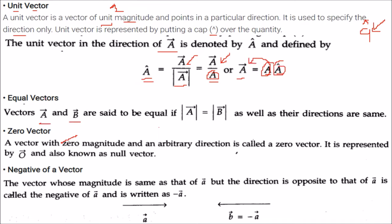Vectors A and B are equal vectors when both their magnitudes and directions are equal. The magnitude is represented by placing two vertical bars around the symbol. A zero vector has zero magnitude and some arbitrary direction, represented by zero with an arrow — also called a null vector. The negative of a vector A is a vector with the same magnitude but opposite direction, written as minus A.